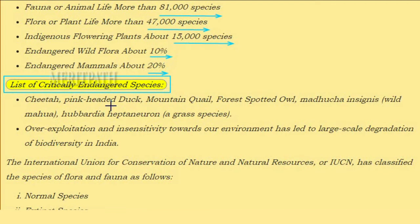Critically endangered species include the cheetah, pink-headed duck, mountain quail, forest spotted owl, Madhuca insignis (wild mahua), and Hubardia heptaneuron, a grass species. Over-exploitation and insensitivity towards the environment has led to large-scale degradation of biodiversity in India.